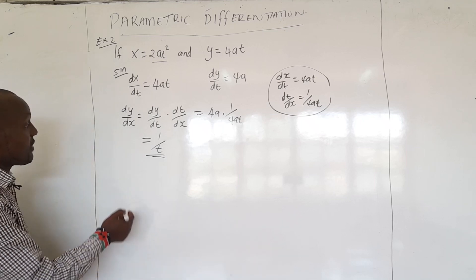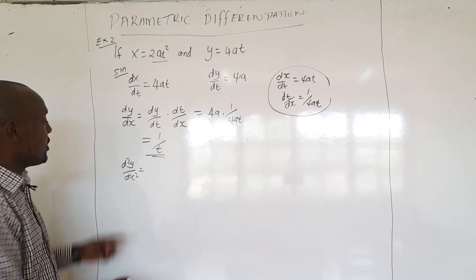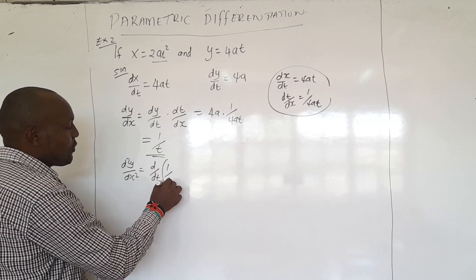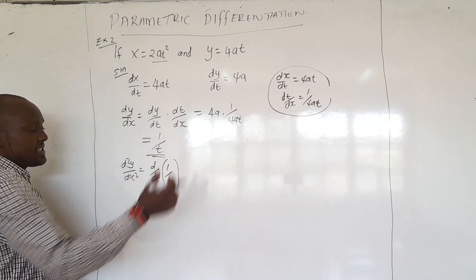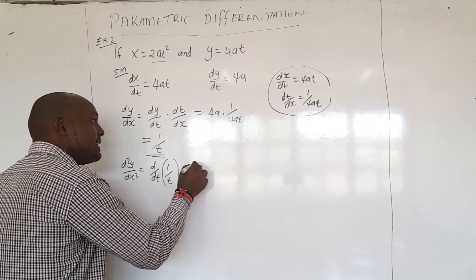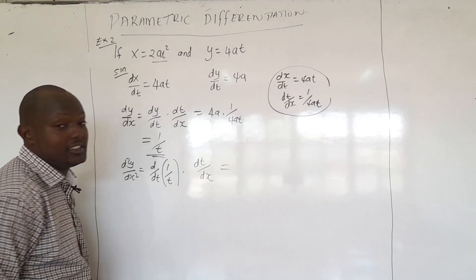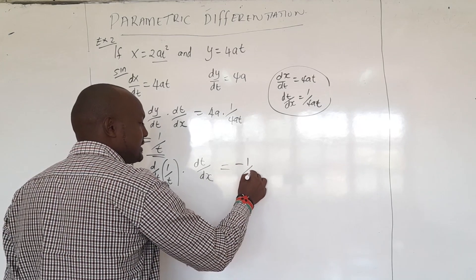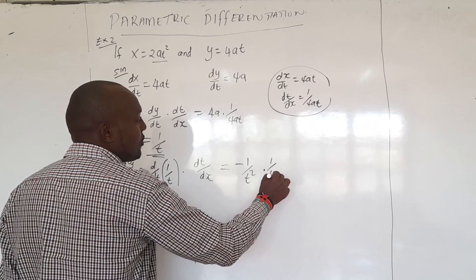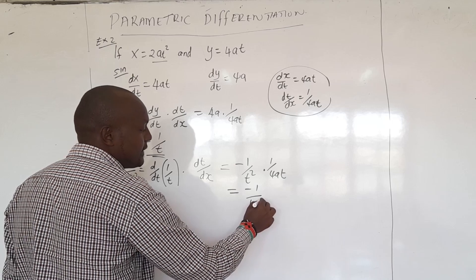For the second derivative, we differentiate the first derivative — which is 1/t — with respect to T, then multiply by dt/dx. Differentiating 1/t gives negative 1 over t squared. Then we multiply by dt/dx, which is 1 over 4at. So the second derivative equals negative 1 over t squared times 1 over 4at, giving minus 1 over 4at cubed.